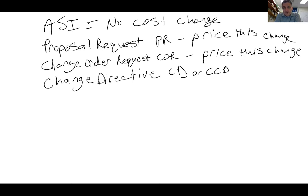With a Construction Change Directive, the owner might say do it on a time and material basis — they'll pay you, just get it done now. You need to make sure you get this in writing and that you've given some kind of rough order of magnitude so the owner has an idea of what the change order might cost.